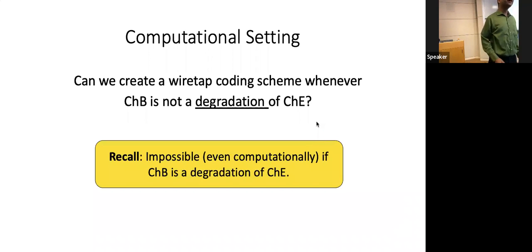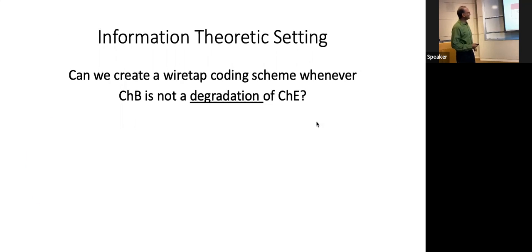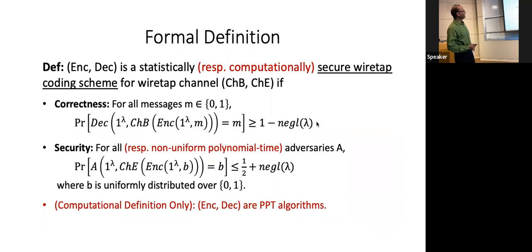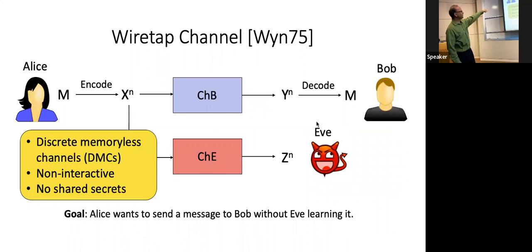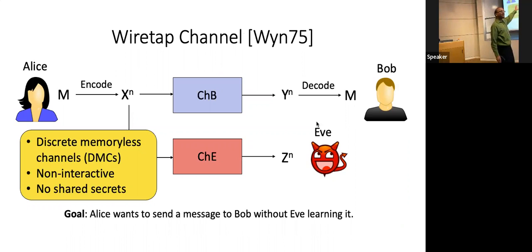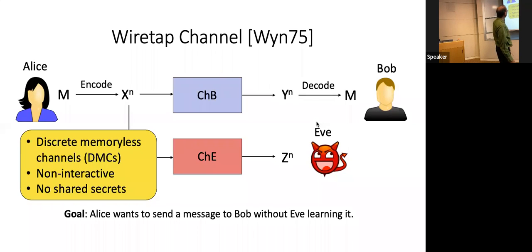A wiretap coding scheme is a pair of algorithms: encode and decode. Encode will typically be probabilistic and decode can be deterministic, though both can be probabilistic. The requirement is that when Alice encodes her message, Bob successfully decodes it, but Eve cannot.